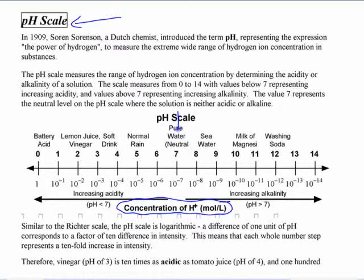Neutral is seven, and then as you go to the left to lower numbers, the solution you're looking at is more acidic, and as you go to the right, the solution you're looking at is more alkaline.